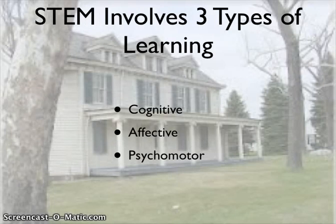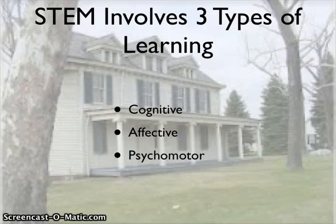STEM involves three types of learning. Cognitive, which is the mental skills or knowledge a student gains. Affective, which is growth in feelings or emotional areas — in other words, their attitude. And psychomotor, which is manual or physical skills.